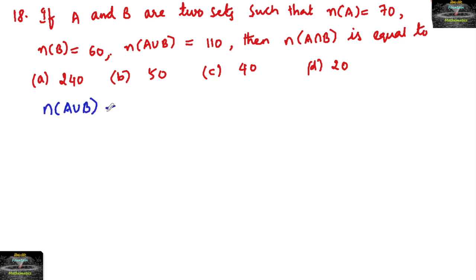Since we know N(A∪B) for any two sets: N(A∪B) = N(A) + N(B) - N(A∩B).